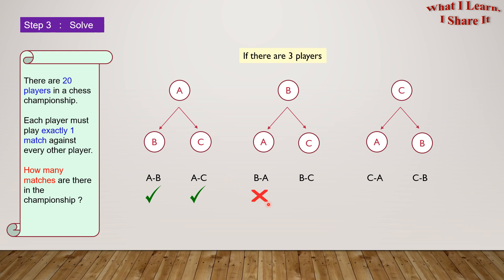The B-A combination is the same as the A-B combination, so we won't consider it. But the B-C combination is unique. We'll consider this. The C-A combination is the same as the A-C combination, so we won't consider it. And the C-B combination is the same as the B-C combination, so we won't consider this also.